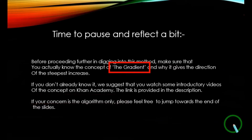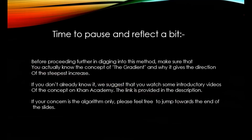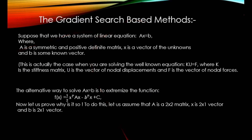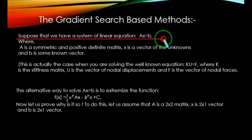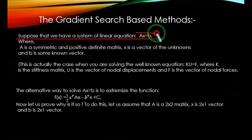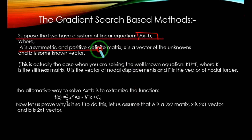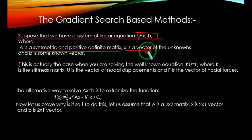Now, without any further delay, let's jump into the topic. Suppose that you have a system of linear equations given by Ax = b, where A is a symmetric and positive definite matrix, x is a vector of the unknowns, and b is some known vector.